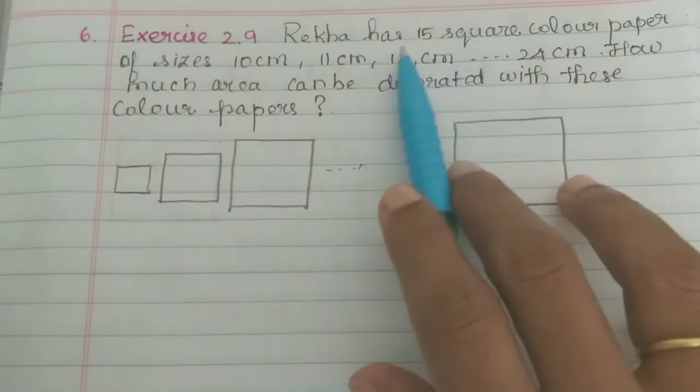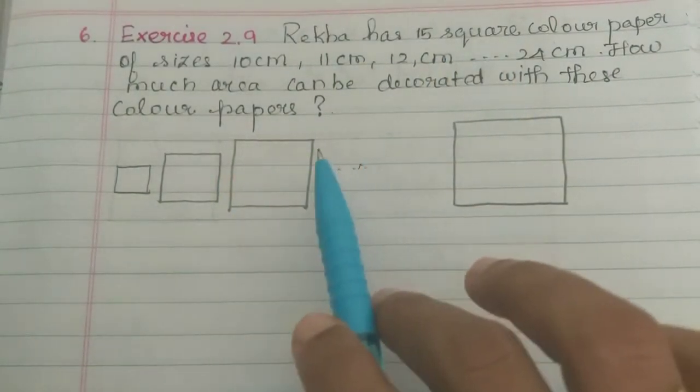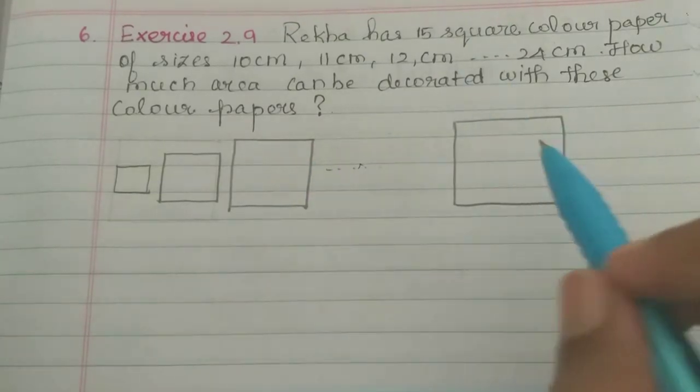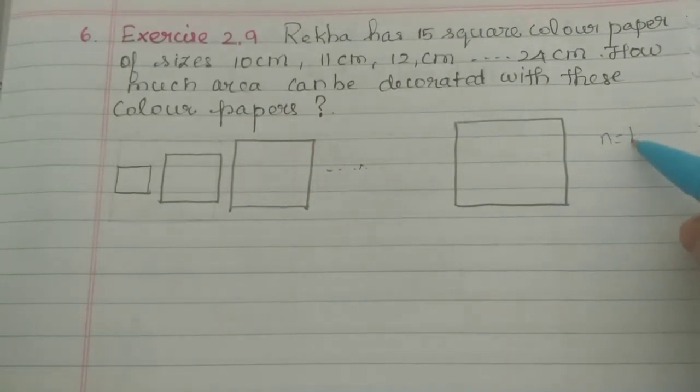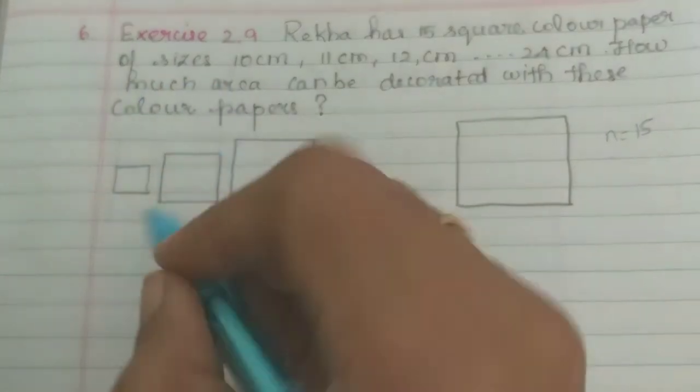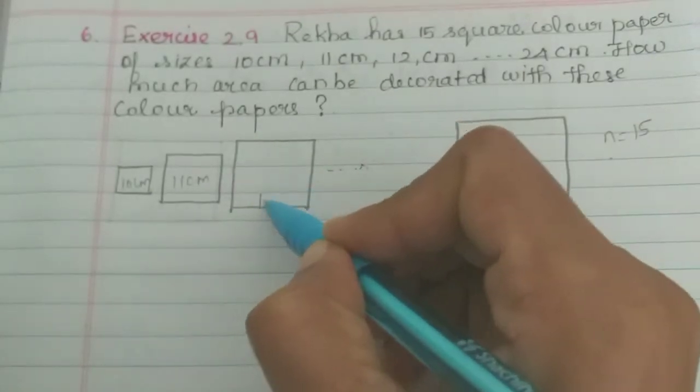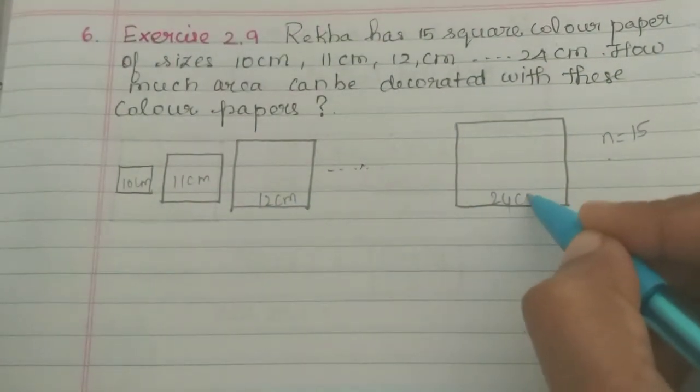So, total Rekha has 15 square color papers. The number of color papers is 15, of sizes 10 cm, 11 cm, 12 cm, etc. up to 24 cm.